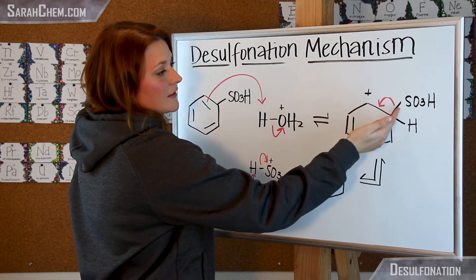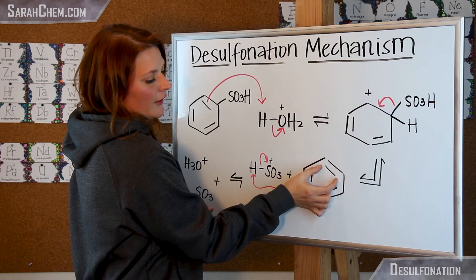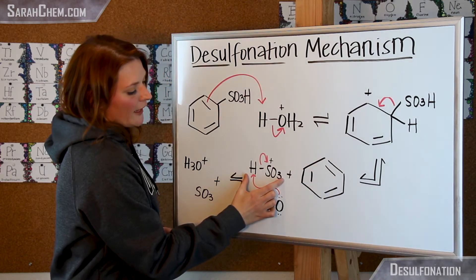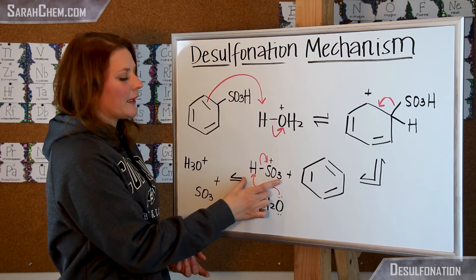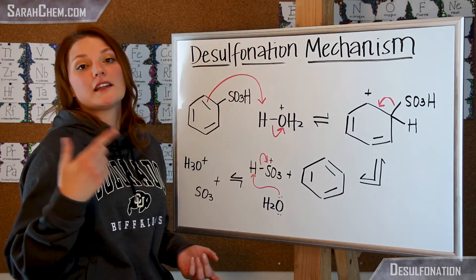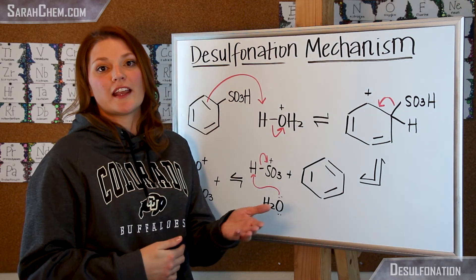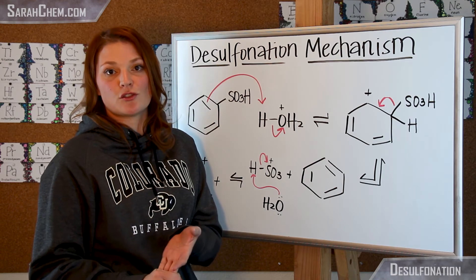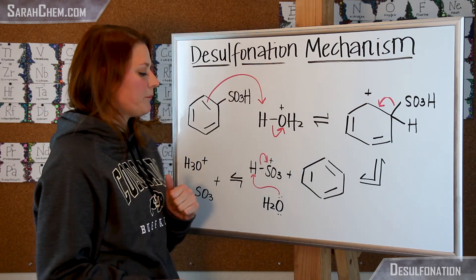When that bond breaks, those electrons are both going to fall into this pi cloud, and then we're going to have kicked this group off. Now this group might look familiar because that's actually the electrophile that we need to form in order to engage in the aromatic electrophilic substitution reaction where we sulfonate a benzene.